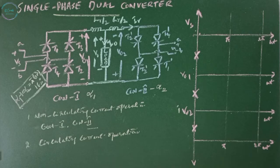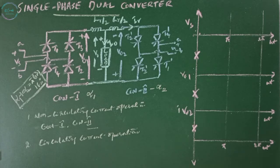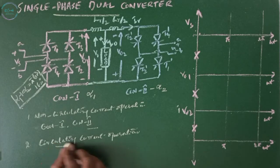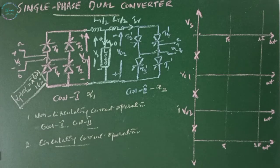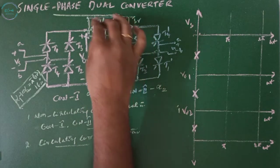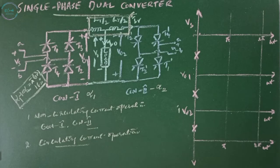In circulating current operation mode, both converter one and converter two operate at the same instant, where converter one operates as a rectifier and converter two operates as an inverter. This creates a problem of circulating current. This circulating current does not flow through the load but circulates between the converters. It can be managed by a reactor circuit that limits the circulating current within acceptable limits.